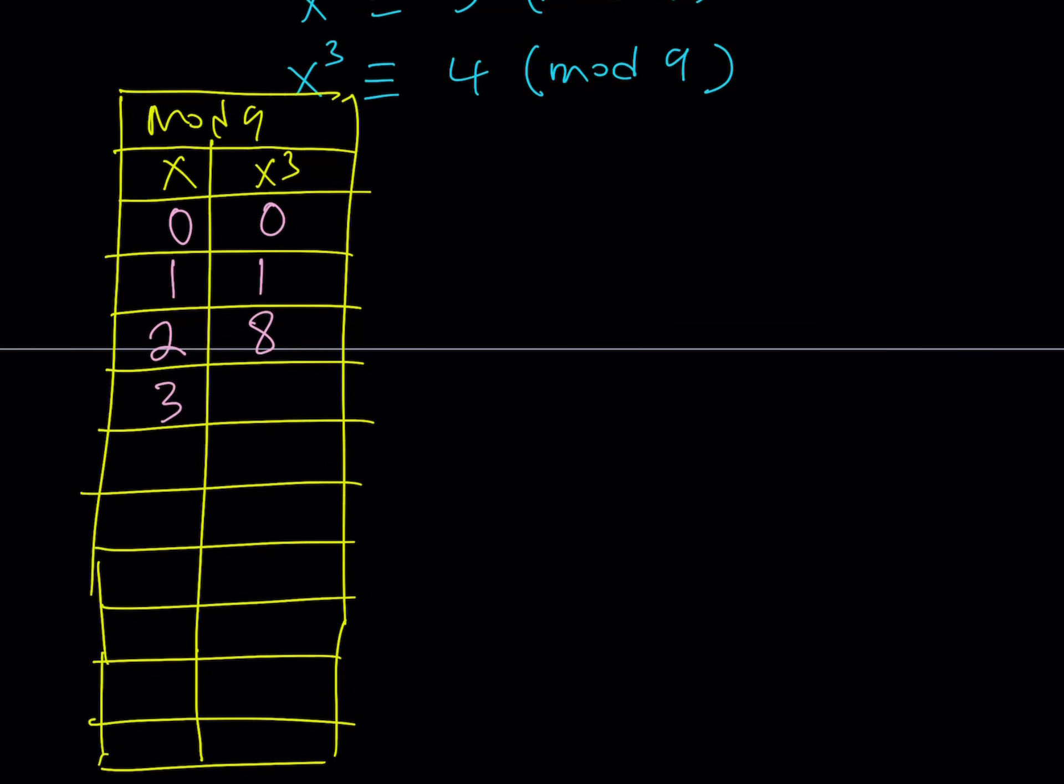27 is, obviously, 0 mod 9. Needless to say. 4³ is going to be 64. And, that should be 1 mod 9. Because, 63 is divisible by 9.